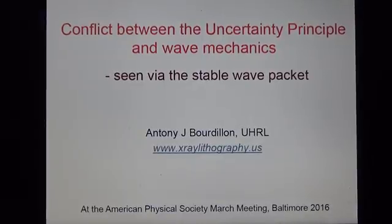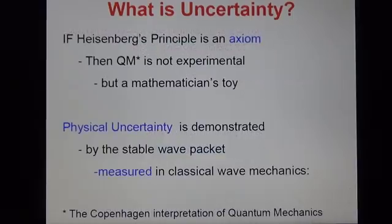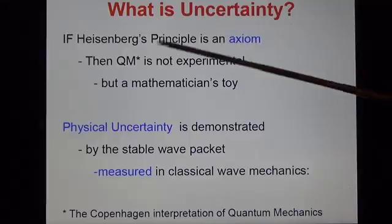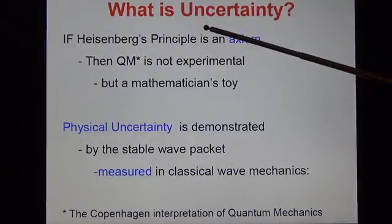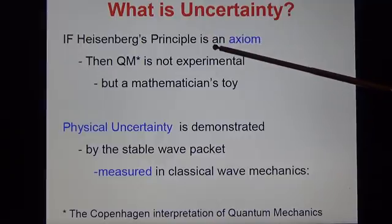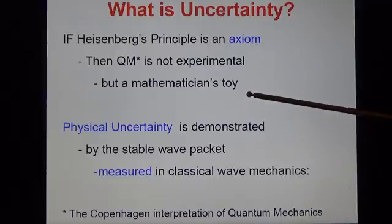This paper was given to the American Physical Society March meeting in Baltimore in 2016. What is uncertainty? If Heisenberg's principle is an axiom, then quantum mechanics is not experimental. It's a mathematician's toy.